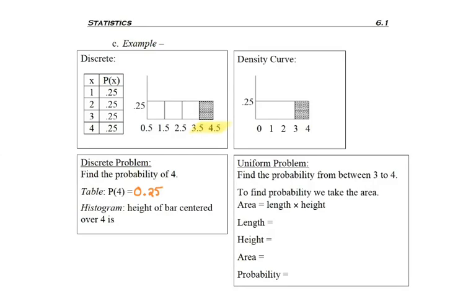Now you'll notice there's not a 4 down at the bottom of the histogram because we're using the class boundaries, but 4 would have the class boundaries of 3.5 and 4.5. So when I look at the height of that spot, I can see it has a height of 0.25.